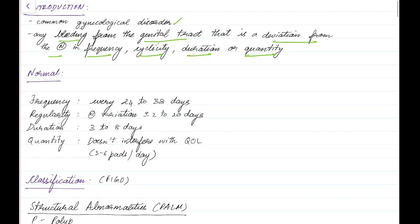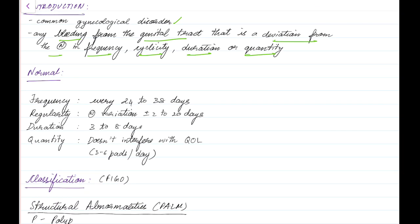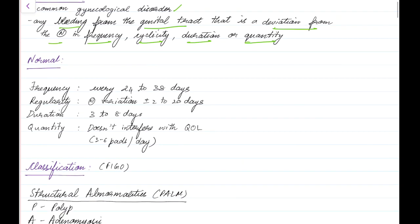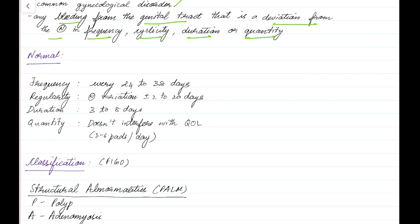Now let us see about the normal range for each of the above mentioned entities. As of 2018, according to FIGO, the normal frequency of menstruation is every 24 to 38 days. In terms of regularity, the normal variation can be plus or minus 2 to 20 days. The normal duration of menstrual flow is 3 to 8 days.